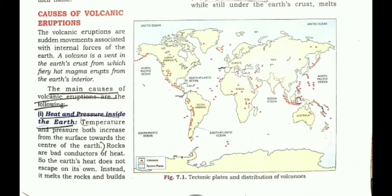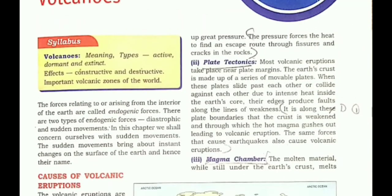Inside the Earth's crust, heat and pressure is very high. We have read in the Earth structure about the temperature of the core and mantle and the pressure in the core, mantle, and asthenosphere. Since rocks are bad conductors of heat, the solid rock material is converted into a molten liquid state, and the pressure causes it to find escape through fissures and cracks.